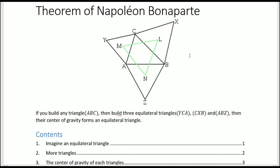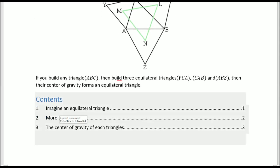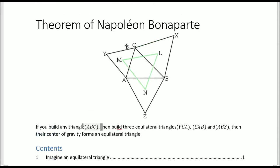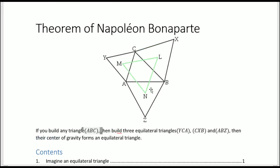This proof is organized around three parts. I'm going first to talk about what makes a triangle equilateral in the complex plane. Then I'm going to talk about building the three equilateral triangles around the first triangle. And then I'm going to talk about the centers of gravity and conclude.